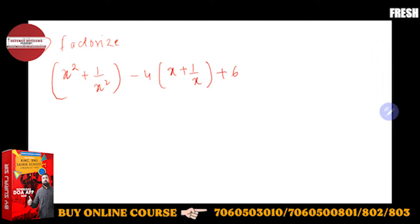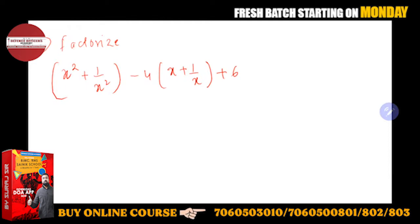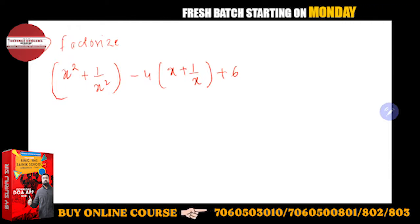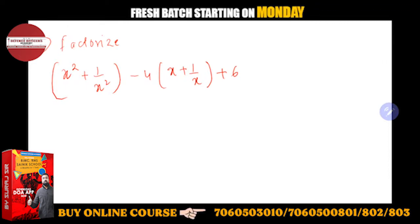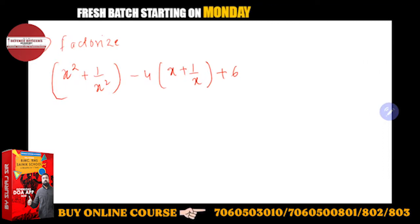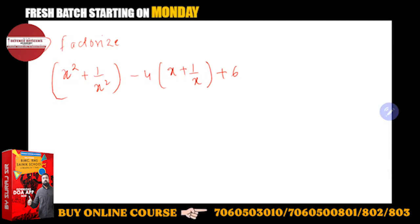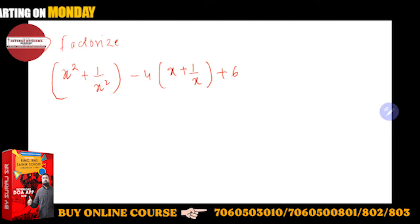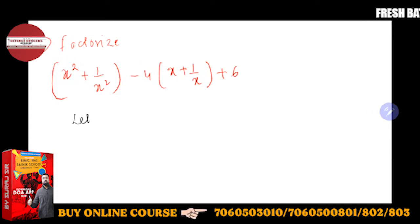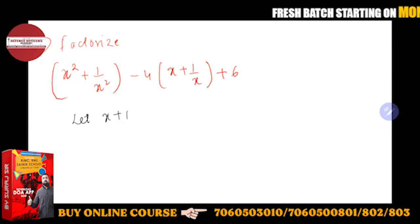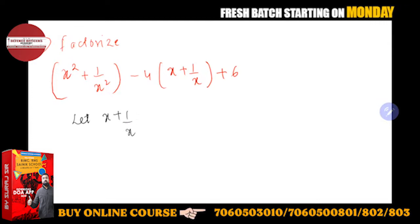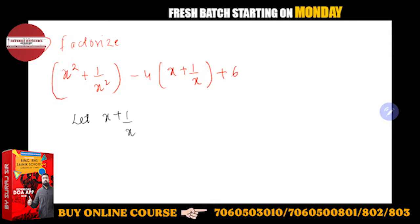Kaisa factorize karayenge? See now, abh yeh jo equation hai, it is not in the proper format. Is mein aap middle term split nahi kar sakte, kyunki thoda sa tough hai. Isko easy banane ke liye, you take let x plus 1 upon x as some other variable.